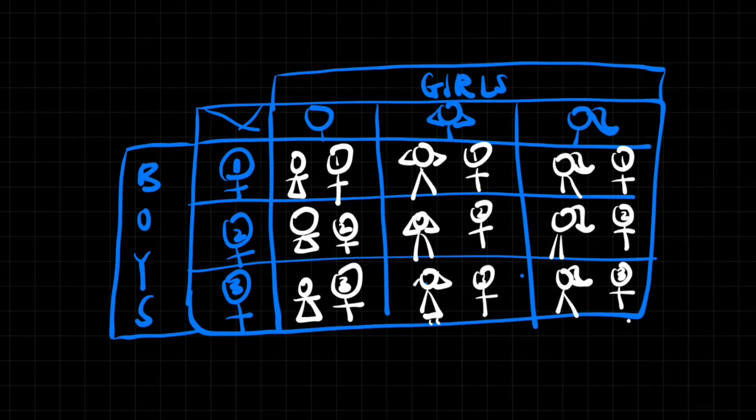And this one box, we call it a cell. So there were nine cells in total. You can see three times three is nine. So there were nine possibilities of couples.